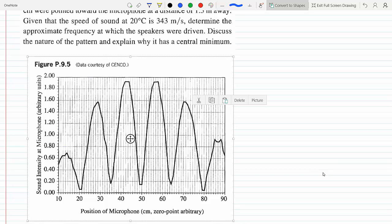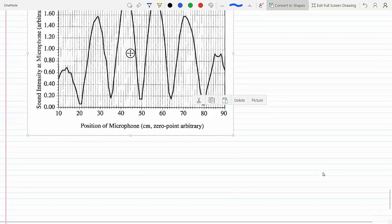This is a direct application of Young's double slit experiment where the two sources of light in the double slit experiment are illustrated here by the two speakers, and the receiver on the screen is illustrated here by the fringe width that we can figure out from the graph.